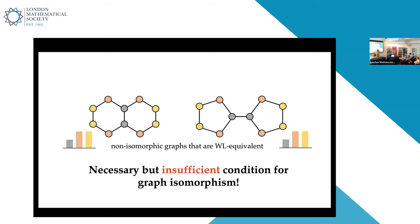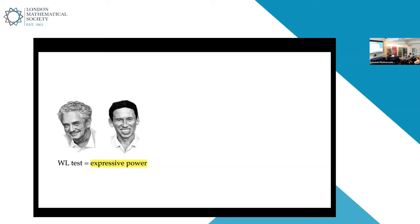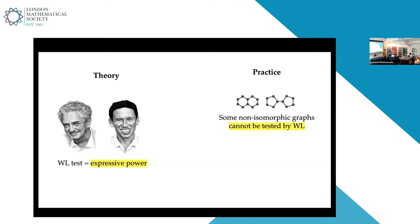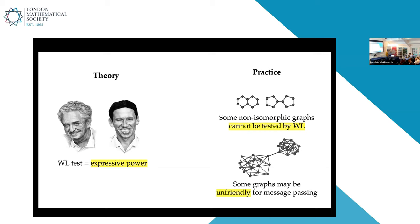This is a necessary but insufficient condition for graph isomorphism — there exist non-isomorphic graphs the WL test cannot distinguish. From the theoretical perspective, message passing is upper bounded by the WL test. On the practical side, there is the problem that not everything can be tested by the simple WL test, and some graphs might be unfriendly for message passing. If a problem requires sending information from one part of the graph to another through a bottleneck — a single edge connecting two cliques — information may be lost on the way. We formalize this as over-squashing.